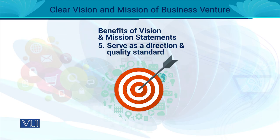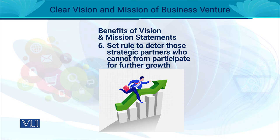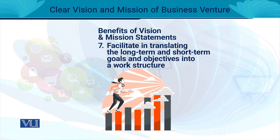Likewise, you get a direction for your quality standards. You set rules when your vision and mission statement are clear in your mind — when your business description and future direction are clear. This also helps you determine whether your strategic partners can continue with you in the future or not. Your vision and mission statement acts as a lighthouse for parting ways when needed. Similarly, when setting short-term and long-term goals, your future orientation — your vision and mission — will always be at the back of your mind.